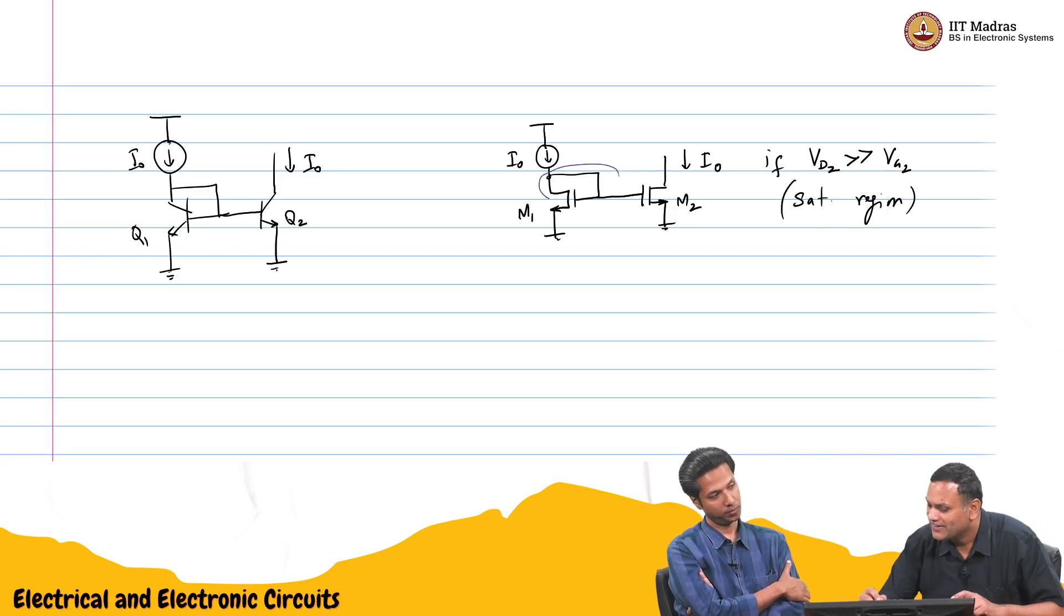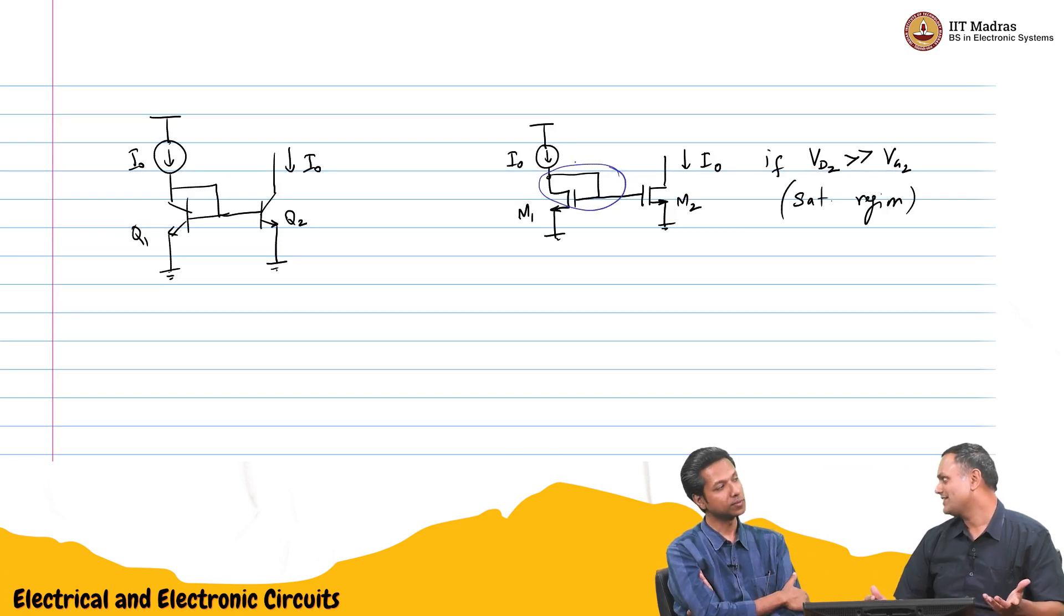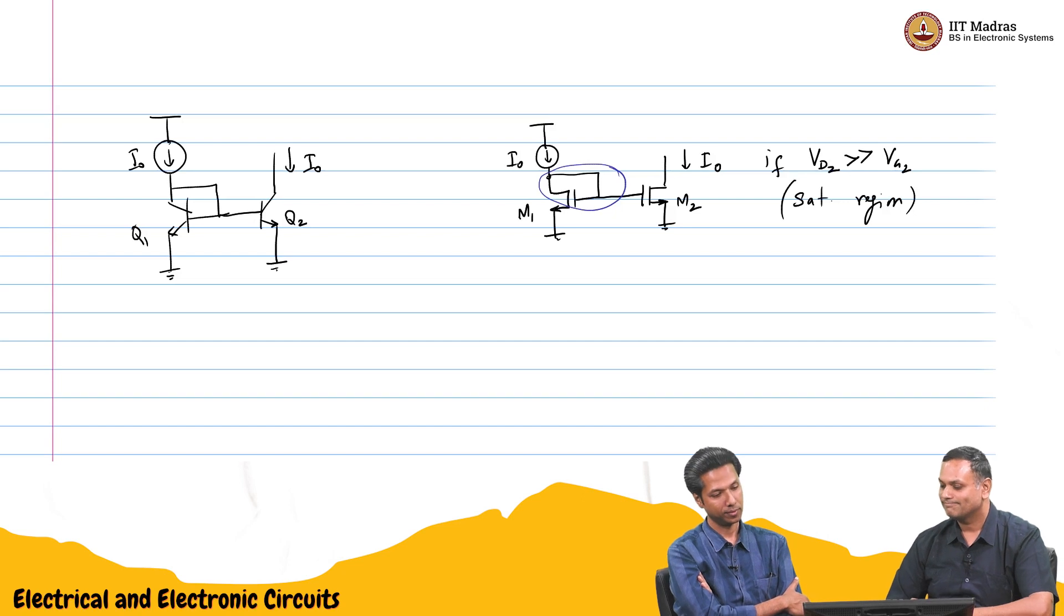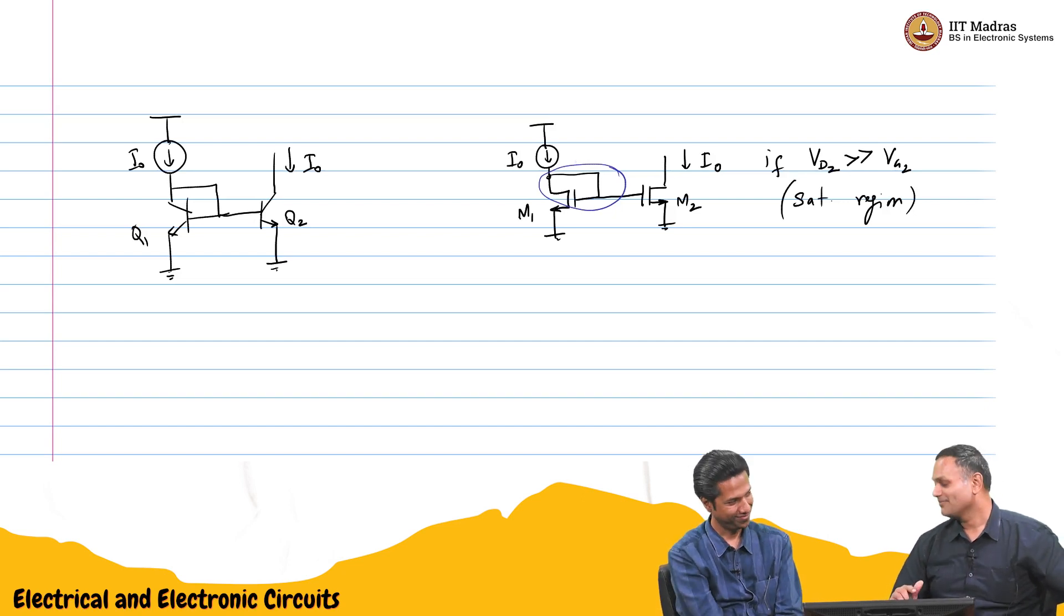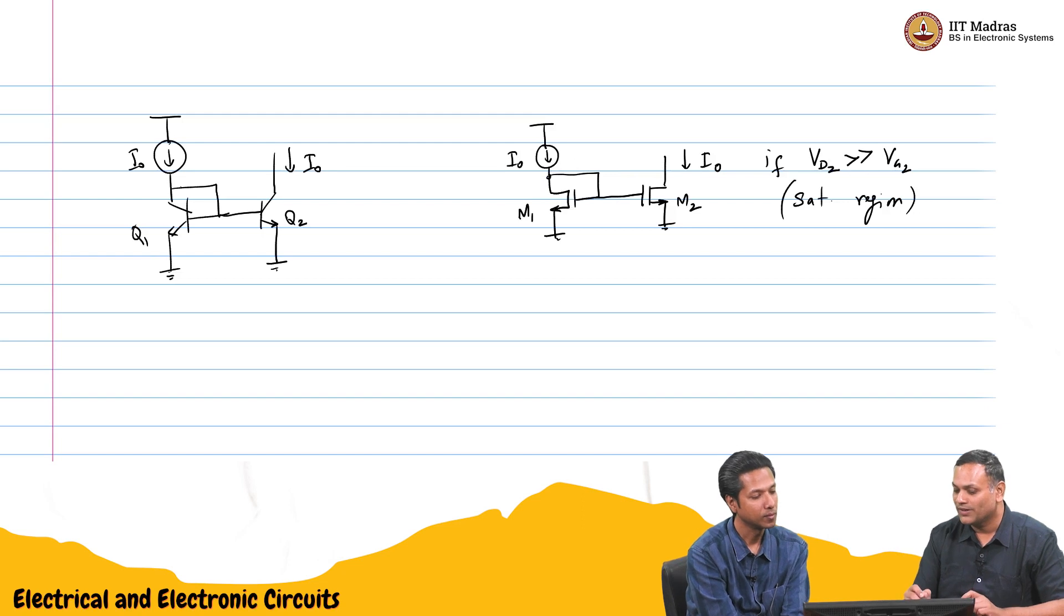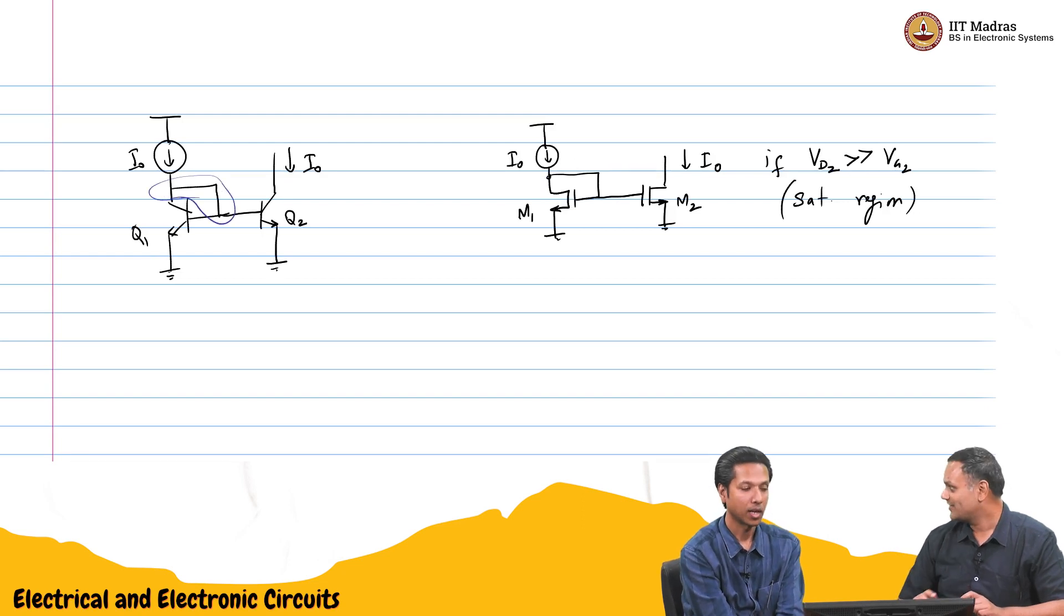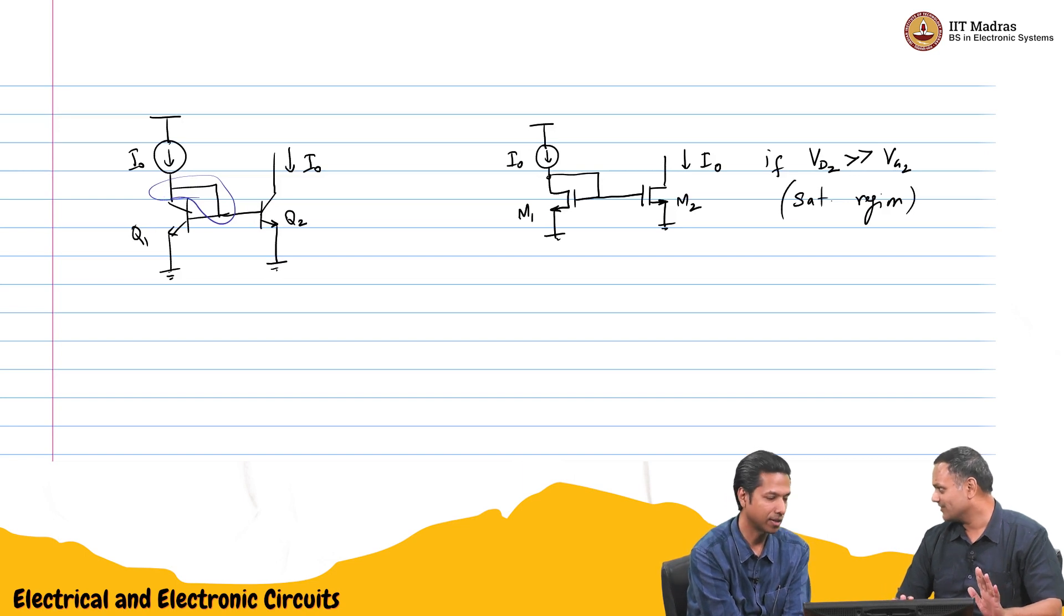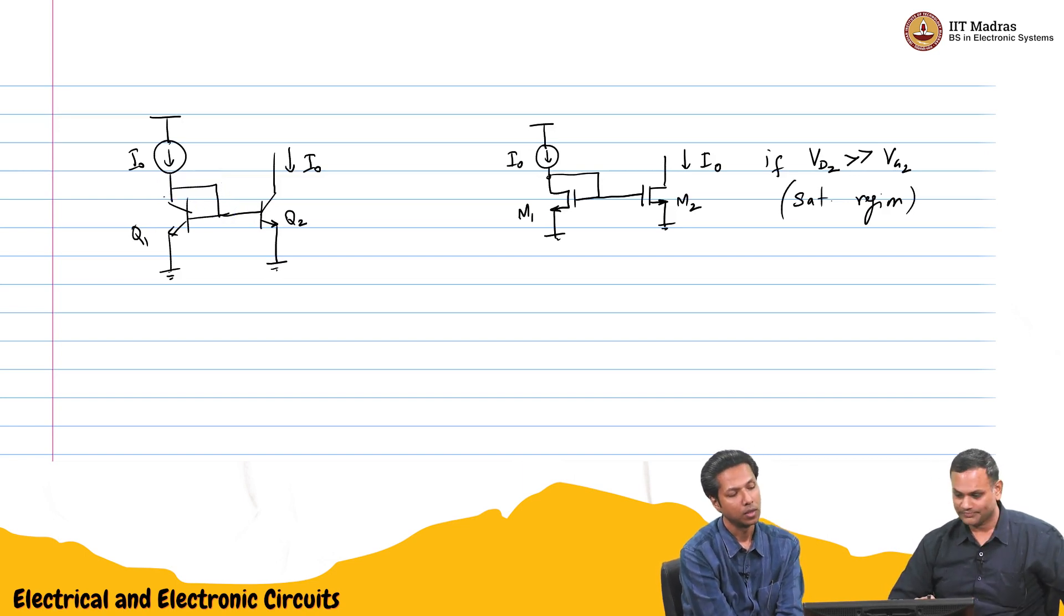In fact, here M1 is always in saturation because the drain and gate voltage are the same. Only if the drain voltage goes below the gate voltage by one threshold voltage does it go into the triode region. That's a good point. M1 is always just like Q1 - Q1 is zero biased, always in forward active region, as far as we are concerned.